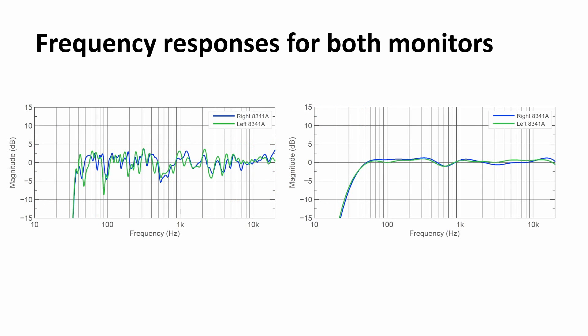In the ideal world, the frequency response from your left and right speaker in a stereo system should be similar. This is what you can see in this diagram. On the left side is a detailed view where you can see there are some differences — for example, caused by reflections from your desktop or mixing console. On the right side, this is smoothed by one octave.